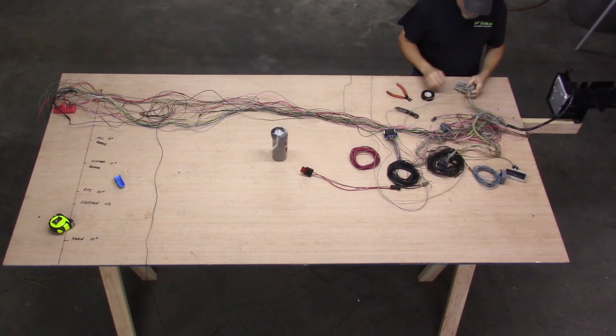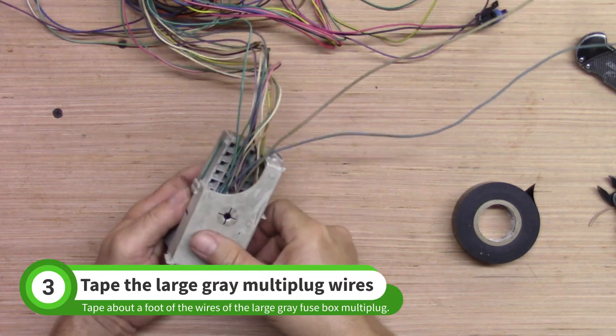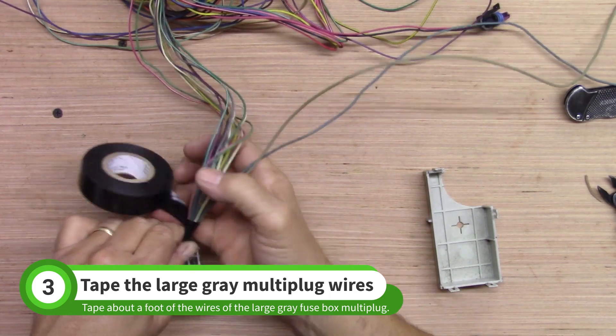Next is the large gray fuse box multi-plug. Hold the cap on the plug to see which direction the wires should exit the plug. Tape about 1 foot of the wires of this plug.